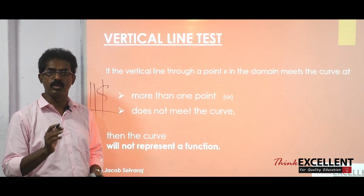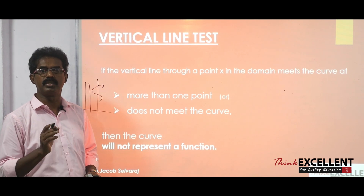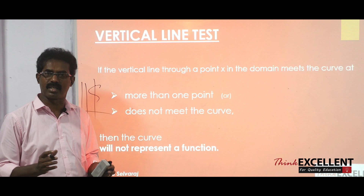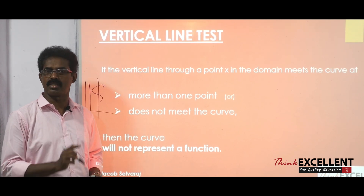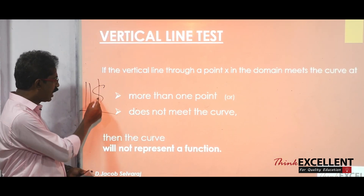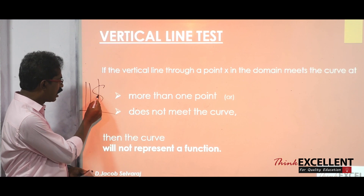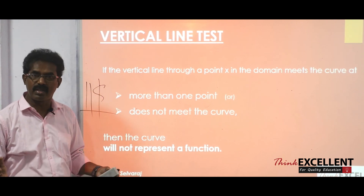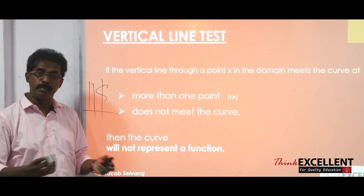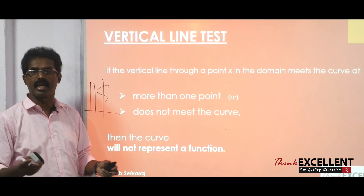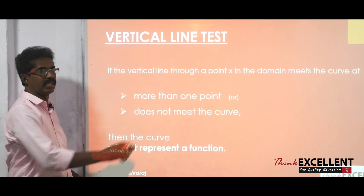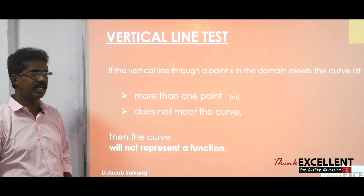So the vertical line test is used to check whether the curve represents a function or not. In two cases we say it is not a function: if the vertical line cuts the curve at more than one place, or if the vertical line does not meet the curve.